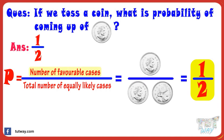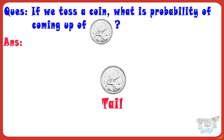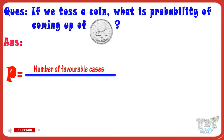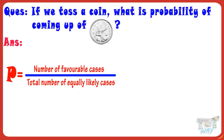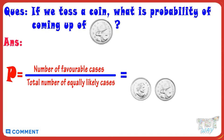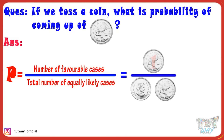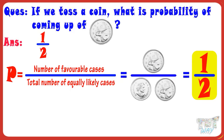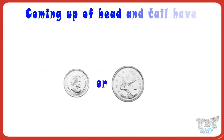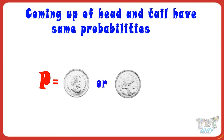Here, one is the favorable case and two is the total number of cases possible. Now, let's take another example. If a coin is tossed, what is the probability of the coming up of the tail? The total number of equally likely cases are two — heads or tails — and the favorable case, the case for which we are finding the probability, is one — coming up of the tail. So, probability of occurrence of the tail equals one by two. We also learn here that coming up of the head and tail have the same probabilities — both have probabilities one by two.